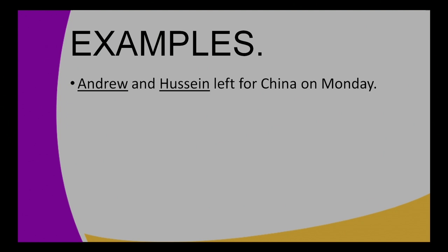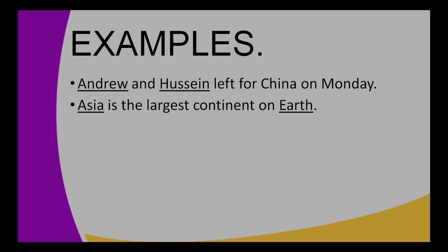Let's look at examples of proper nouns. Example one: Andrew and Hussein left for China on Monday. Andrew and Hussein are names of people, China is the name of a country, and Monday is the name of a day — all belonging to the class of proper nouns. Example two: Asia is the largest continent on earth. Asia is the name of a continent and Earth is the name of a planet, making both proper nouns.